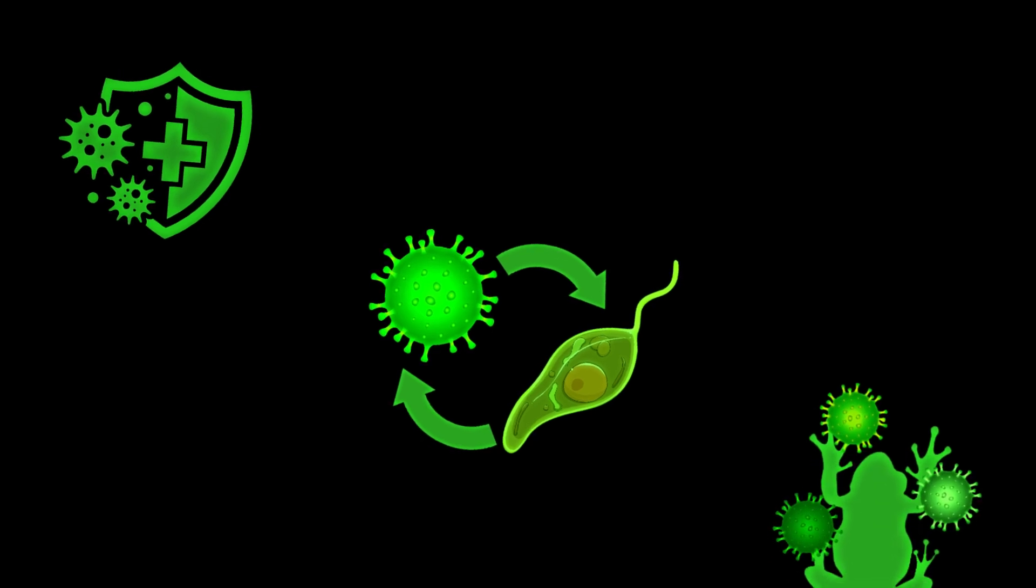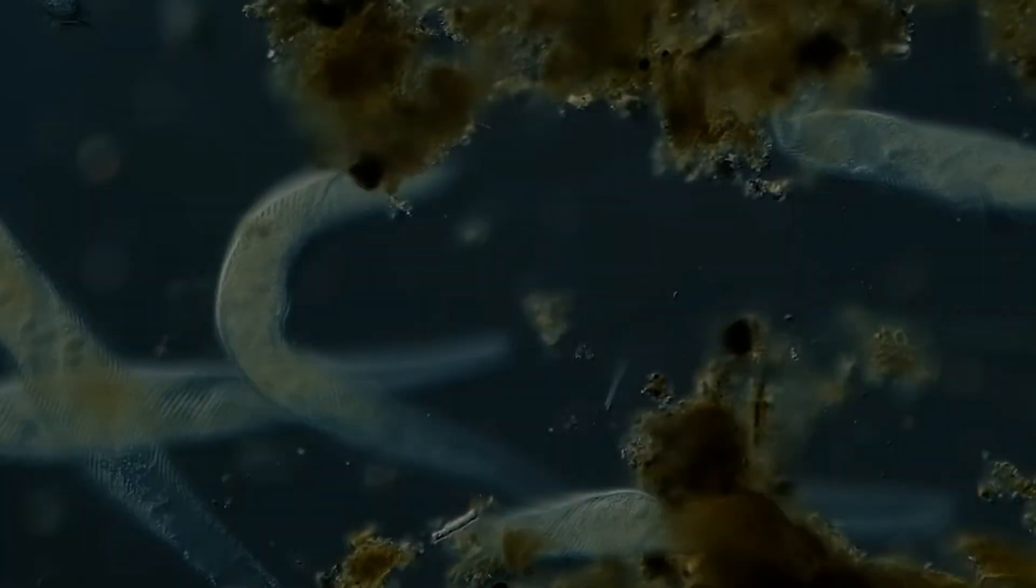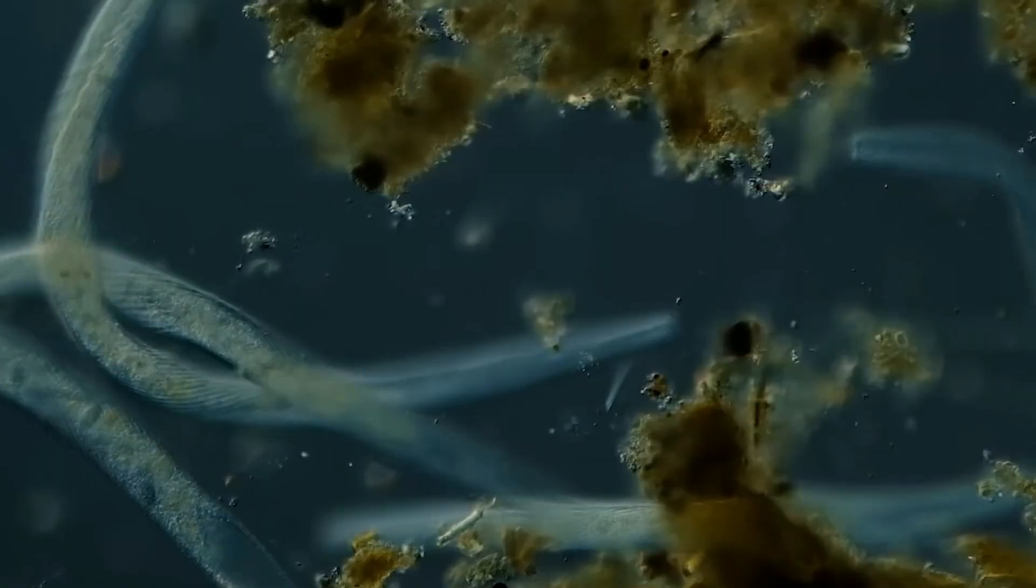They can now hide from immune systems, change their identities, and hijack living cells like machines. And when disaster came to wipe everything out, they evolved even faster.